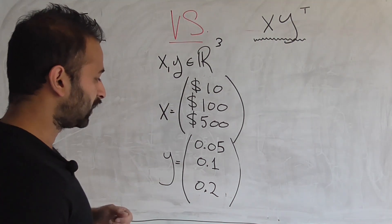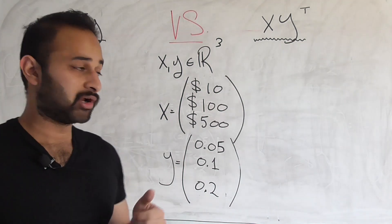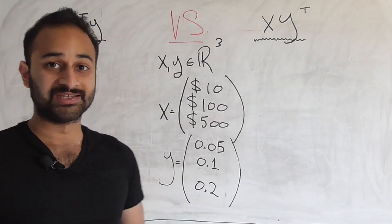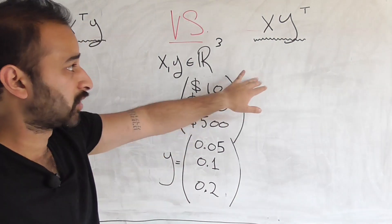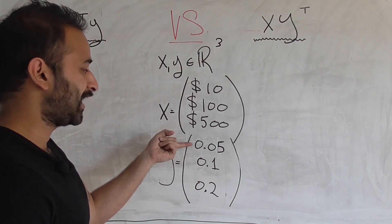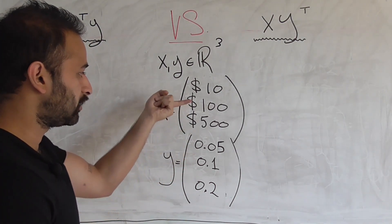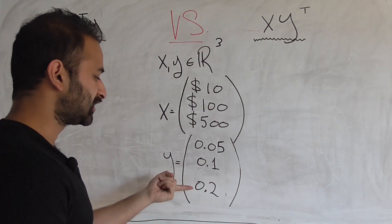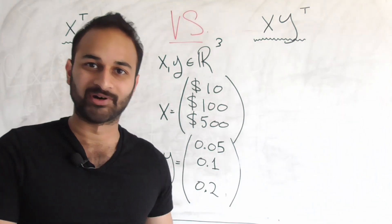Now, the Y vector is going to be various different tax rates. And this is how much each of these different categories is taxed. At first, that's what it's going to mean. We're going to change the meaning a little bit to talk about the second operation. But for now, think of it as I get taxed at 5% on my food, I get taxed at 10% on my transportation, and I get taxed at 20% on my housing. And by I, I mean the company is getting taxed.